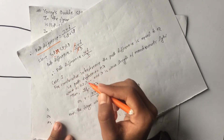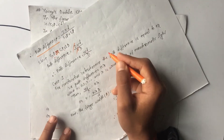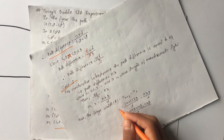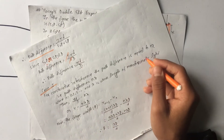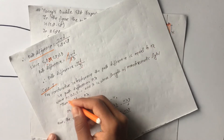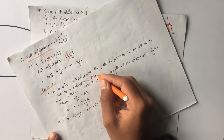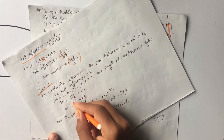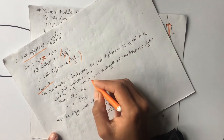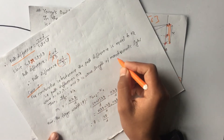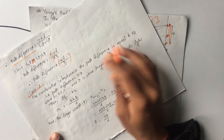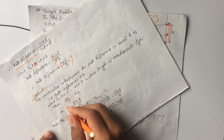Now, for constructive interference, the path difference is equal to n times lambda, where n equals 0, 1, 2, 3, 4. Lambda is the wavelength of the monochromatic light. So the path difference equals n lambda.